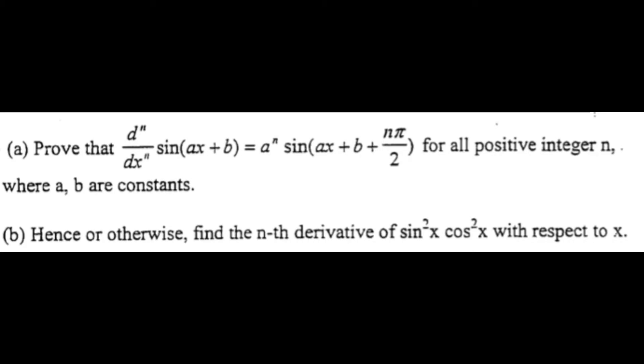I've had a student send through this interesting proof question. It involves a combination of proof and trigonometry. It's got two parts. Part A says to prove that d^n/dx^n, or in other words the nth derivative of sin(ax+b), is equal to a^n times sin(ax+b+nπ/2) for all positive integer n, where a and b are constants.